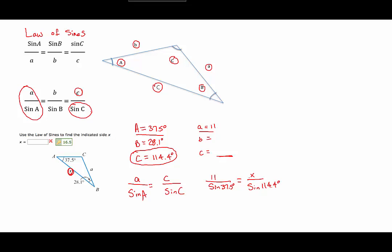So in order to solve for X, we will multiply both sides by the sine of 114.4 degrees to get that to cancel out. So sine of 114.4 degrees. So that cancels here.